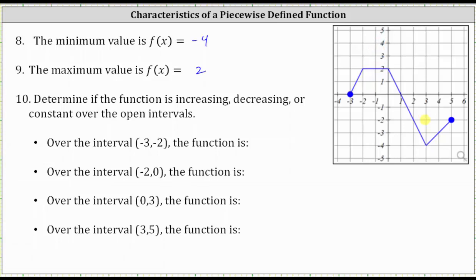For number 10, we're asked to determine if the function is increasing, decreasing, or constant over the given open intervals. We analyze the graph from left to right: if the graph goes uphill, the function is increasing; if downhill, it is decreasing; and if horizontal, it is constant. Over the open interval from negative 3 to positive 2, the graph is going uphill from left to right, and therefore the function is increasing over this interval.